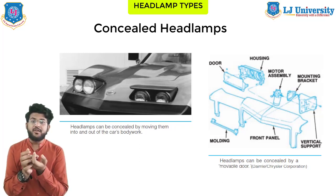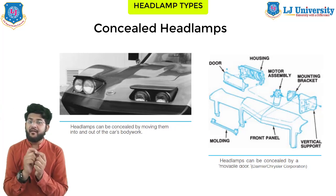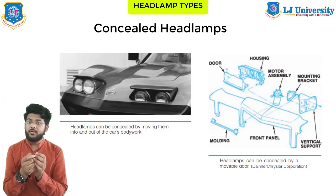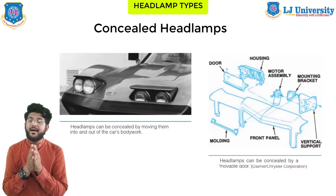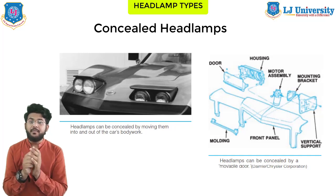Laws require that the main headlamp switch control the concealing mechanism. Pop-up headlamps that rise out of the hood must not come on until they have completed 75 percent of their travel. Switches used with electrically operated headlamp doors have additional contacts to activate this relay. Vacuum activated systems usually have a vacuum switch attached to the headlamp switch. Some older cars may have a separate switch to control the door. All concealed headlamp systems must also have a manual opening method, such as a crank or lever, as a backup system.